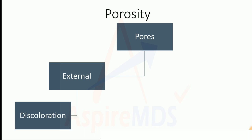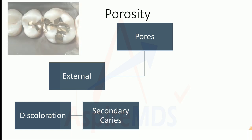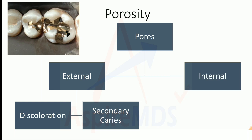External pores will lead to discoloration of the casting and to secondary caries. For example, if a casting is placed on a tooth and there is porosity at the interface of the casting and the tooth surface, there will be food lodgment, which will lead to caries.